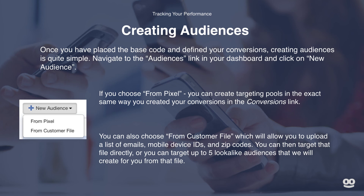Once you have placed the base code and defined your conversions, creating audiences is quite simple. Navigate to the audiences link in your dashboard and click on New Audience. You will then see two options: upload from pixel or from customer file. If you choose from pixel, you can create targeting pools the same way you created conversions. From customer file, you can upload a list of emails, mobile device IDs, and zip codes, then target that file directly or create up to five lookalike audiences. Note that the lookalike function is currently only available for US markets.